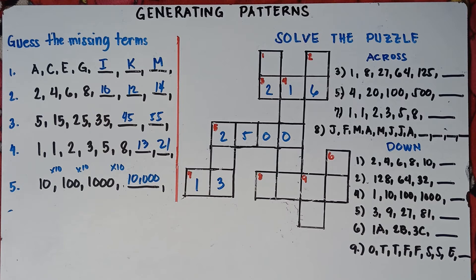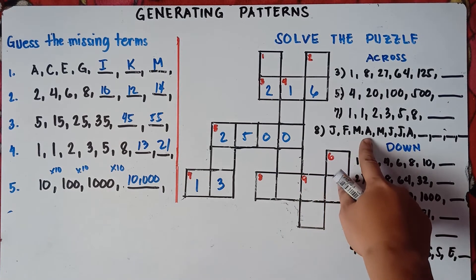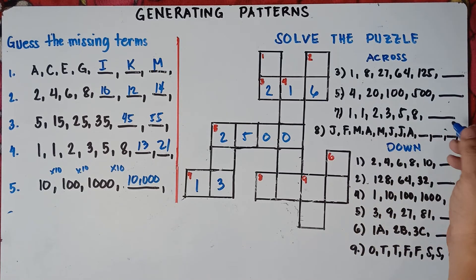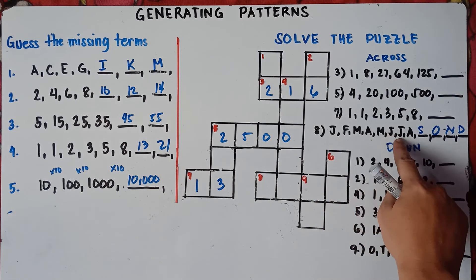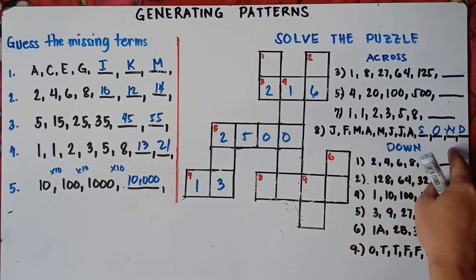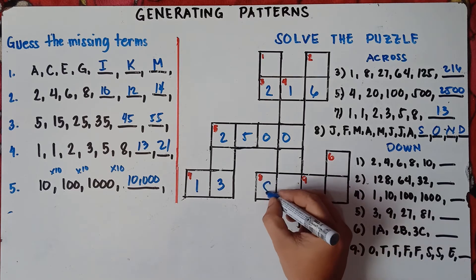For number 8 across, you check the pattern with letters. These are months: January, February, March, April, May, June, July, August. The next will be September, October, November, December. So our answer for number 8 is S, O, N, D — September, October, November, December.